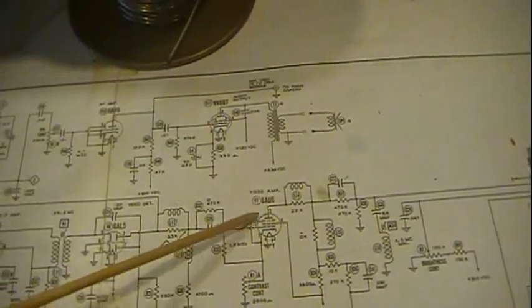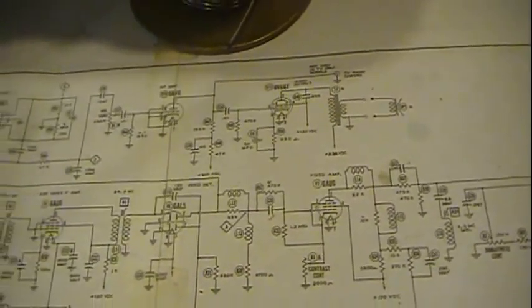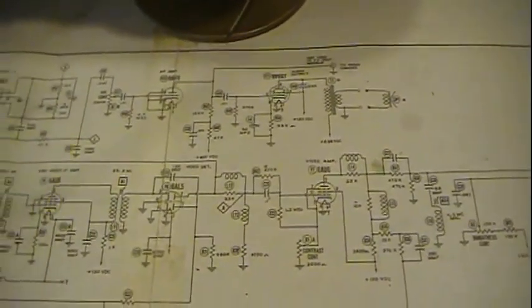That's all I'm trying to really point out more than anything, is that knowing your pin numbers and getting them on here, you can find everything from that point because it's easy to find a tube socket. Once you know you got the right tube socket, then you can start following out those circuits.